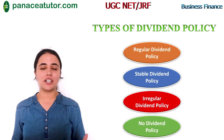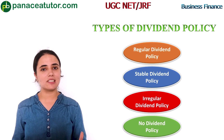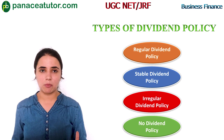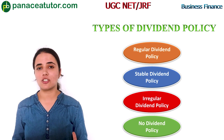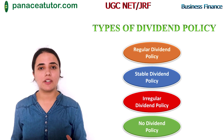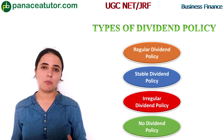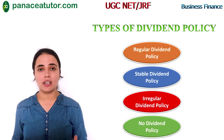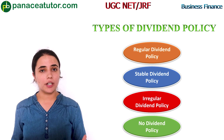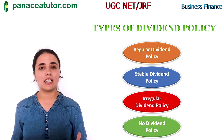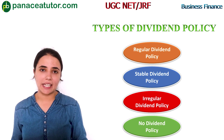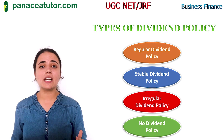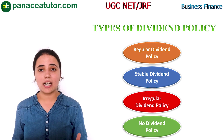Moving to the different types of dividend policies. The first is regular dividend policy, mostly preferred by retired persons, widows, or weaker sections of society. Under regular dividend policy, the company pays dividend at the regular rate every year — whether a company is earning profit or not. If a company is not earning profit in any year, it will declare the dividend out of its reserves. So under regular dividend policy, dividend is paid at a fixed rate every year.